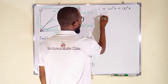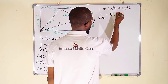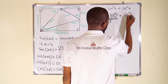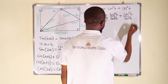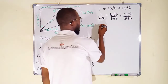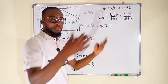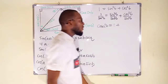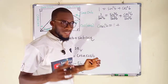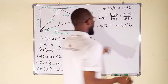Dividing sin²B + cos²B = 1 through by sin²B gives us: one divided by sin²B equals sin²B over sin²B plus cos²B over sin²B. The reciprocal of sine is cosecant, so this becomes cosec²B = 1 + cot²B. Remember, cos over sin is cotangent. Look at this important identity.